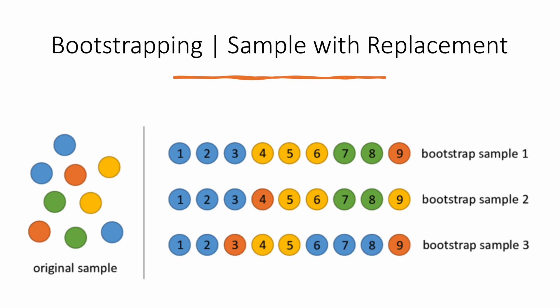Bootstrapping, or in other words, we can call it sample with replacement. Think of a box with different colored balls in a basket. Suppose I ask you to pick one ball blindfolded — randomly — and you have to pick nine balls total. The only condition is: once you pick the ball, note the color, and put it back in the basket. That part — putting it back — is what we mean by 'with replacement.'